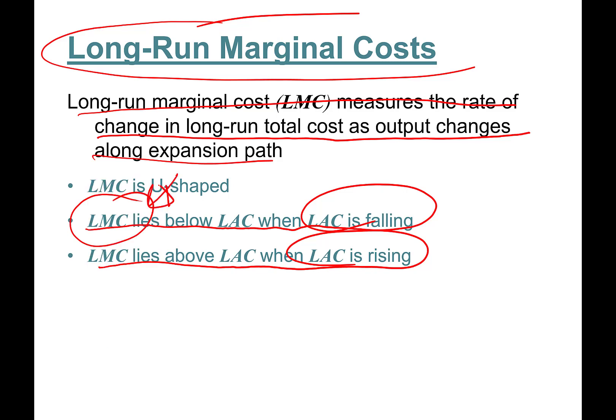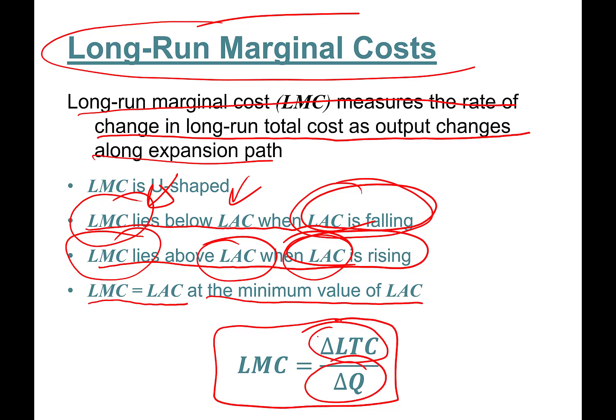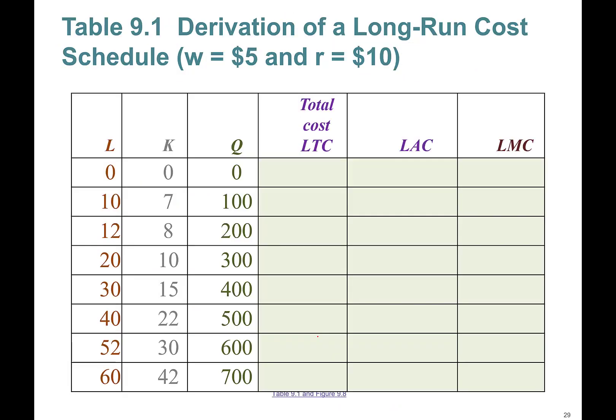On average, if the marginal cost is less than the average cost, then average cost is going to fall. If the additional cost is larger—the last unit is costing more than the average cost of producing so far—therefore the average cost is going to go up. Long-run marginal cost and average costs are equal to each other at the minimum value of the long-run average cost curve, just like in the short run.